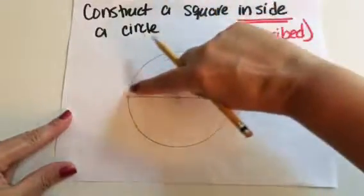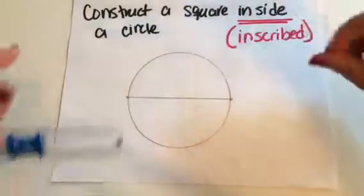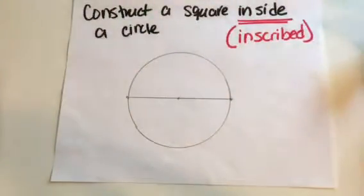and they need to be exactly the same distance and perpendicular away. So I'm going to do the perpendicular bisector construction.